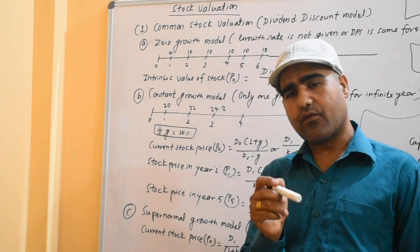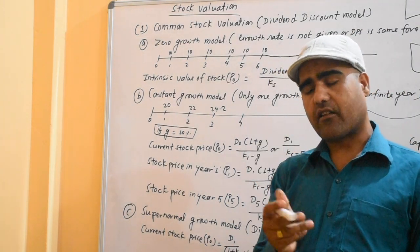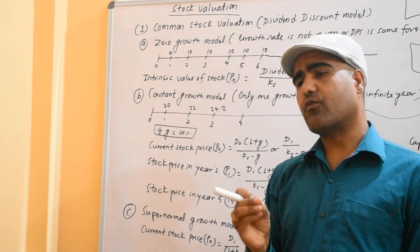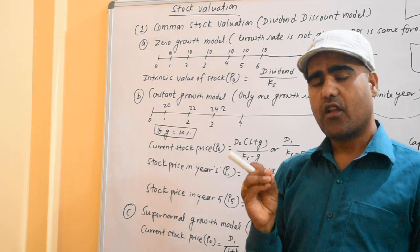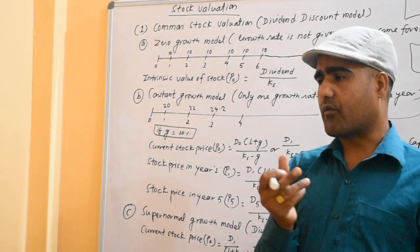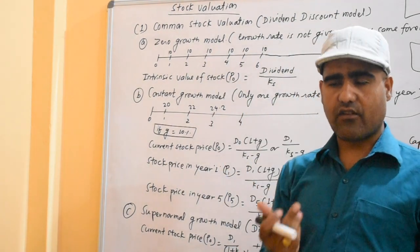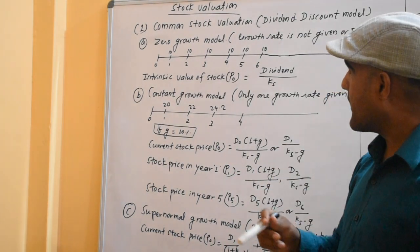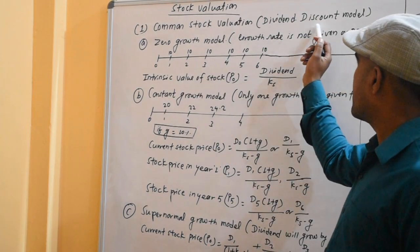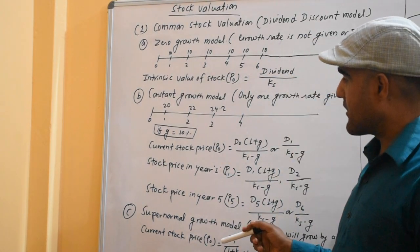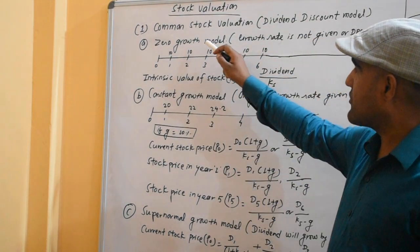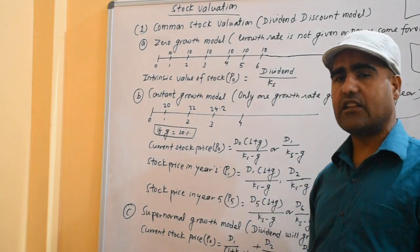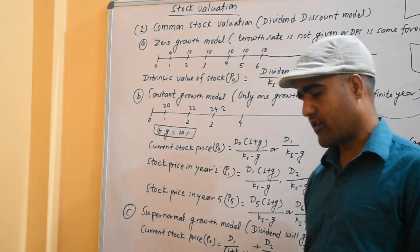The common stock value is based on the dividend discount model. Dividend is based on which dividend is associated with the dividend, and the dividend is what you want to determine. The dividend discount model leads us to the common stock valuation using a three-fold model.